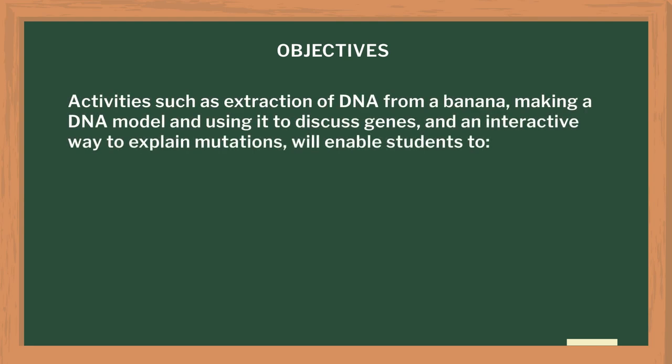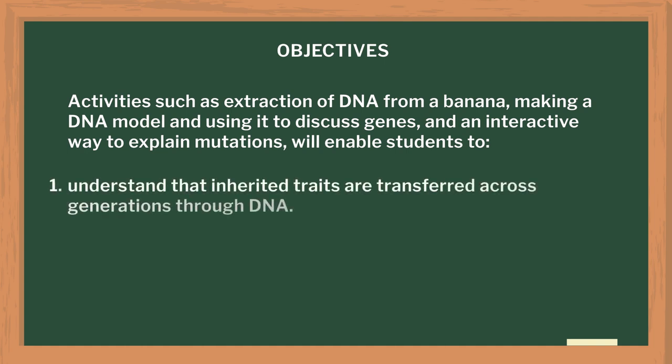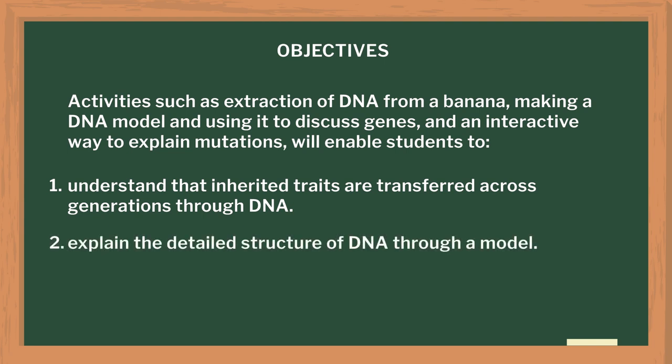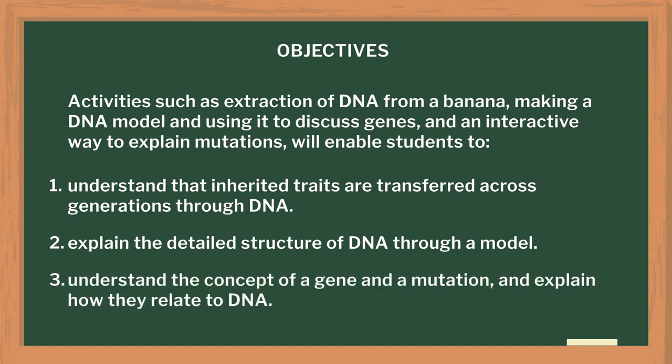These activities — like extracting DNA from a banana, making a DNA model, using it to discuss genes, and an interactive way of explaining mutations — will enable students to understand that inherited traits are transferred across generations through DNA. Students will be able to explain the detailed structure of DNA through the model and understand the concepts of gene and mutation and how they relate to DNA.